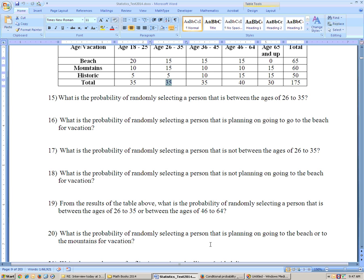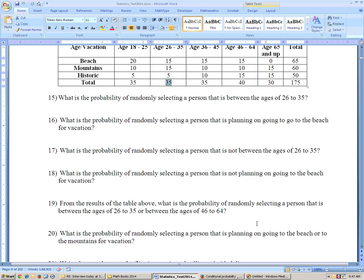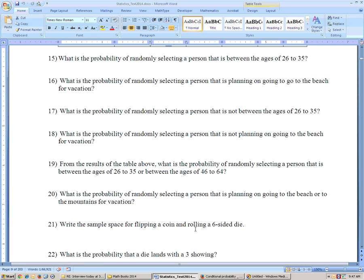20, what is the probability of randomly selecting a person that is planning on going to the beach or to the mountains? Well, add those together. Beach, 65 plus 60 is 125 out of 175. And we'll stop there at problem 20, and we'll pick it up on the next video on problem 21.